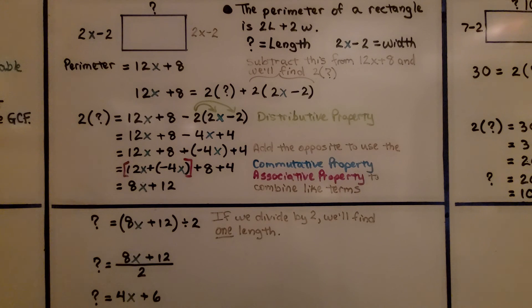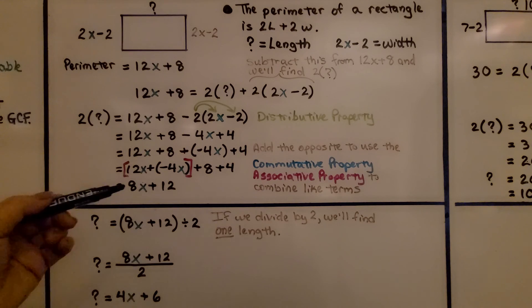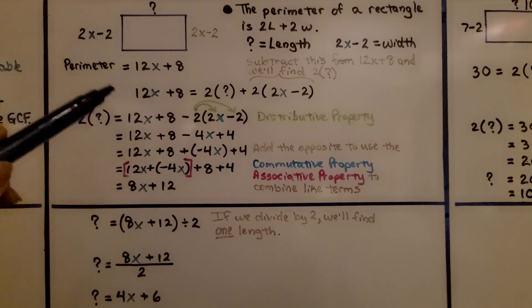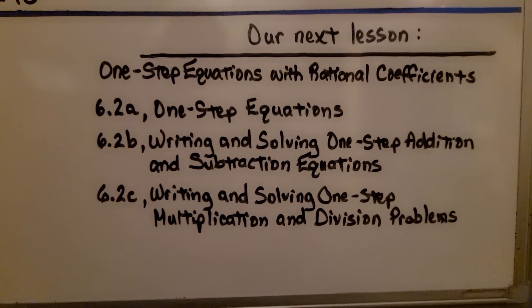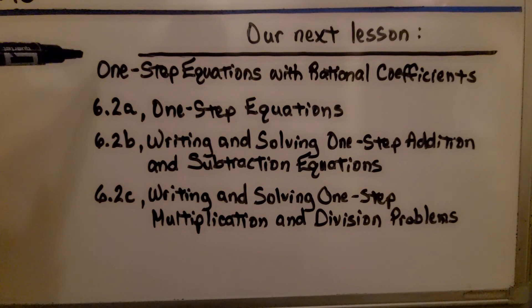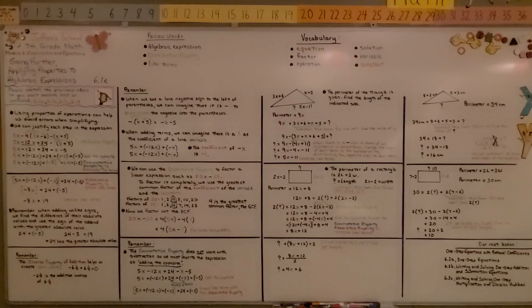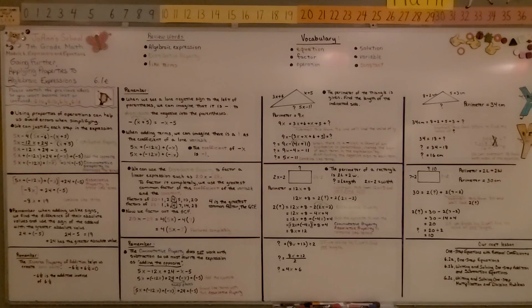If this was confusing, try going back to the beginning where we did it without variables, then watch the variable part again. We've finished lesson 6.1 and we're moving on to 6.2, which is about one-step equations with rational coefficients. 6.2a covers one-step equations. Knowing the distributive, commutative, associative, and inverse properties of addition will really help you. I hope your day is wonderful, and I hope you join me for our next lesson. Bye!